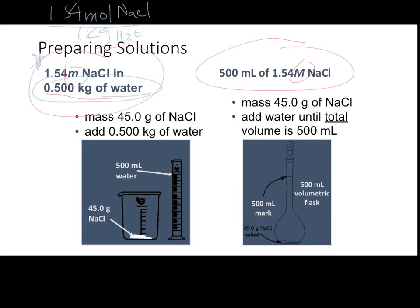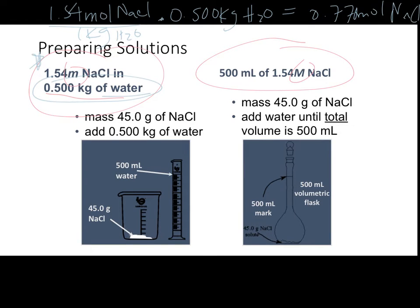We're going to multiply our molality value by the number of kilograms of water they want us to use. So 1.54 times 0.5 gives us 0.77 moles of NaCl. Now we don't measure out moles using scales, so we'll obviously want to convert this into grams using molar mass. What we end up getting is 45.0 grams of sodium chloride, which is the mass of the solute we are going to be adding to our container.